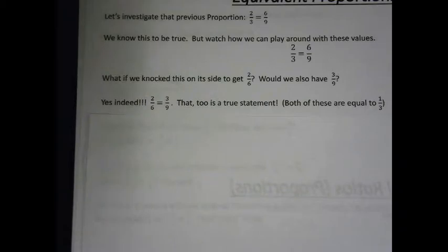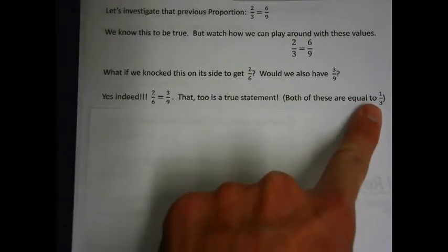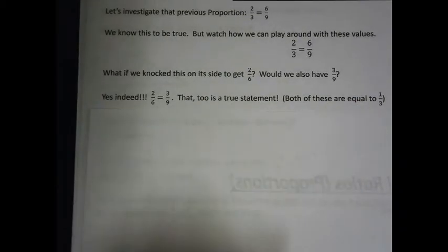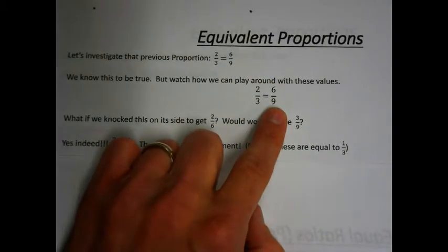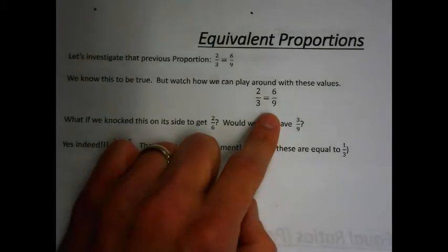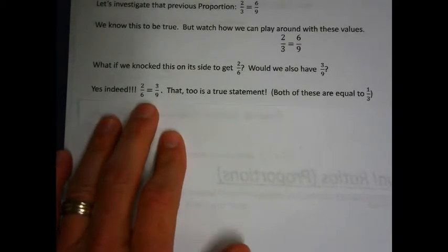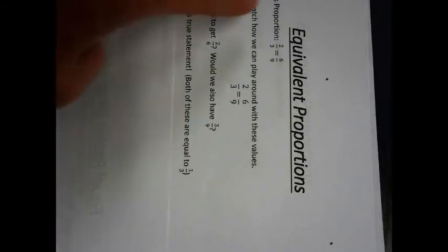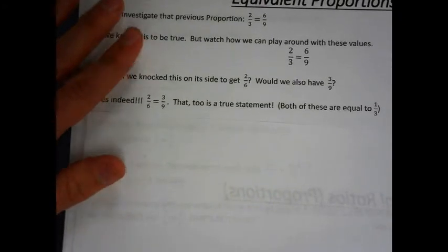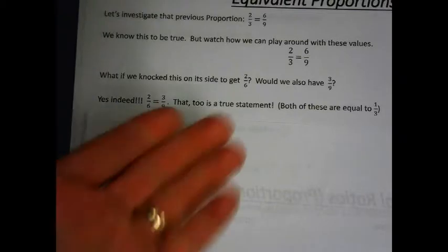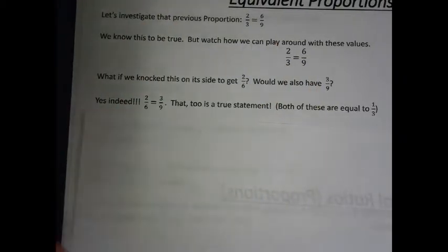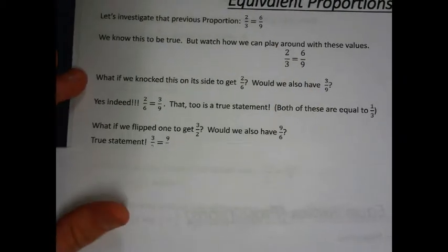Both of them are one third — both 2 over 6 and 3 over 9 are equal to 1 over 3. So this proportion that we had, we could totally play around with it and we would still have two equal ratios. So we can mess around with it and see that if we knock it on its side, 3 over 9 and 2 over 6 is an equal ratio as well — that is also a proportion, a true statement. They're no longer 2 thirds, but still, it's a thing we can do.